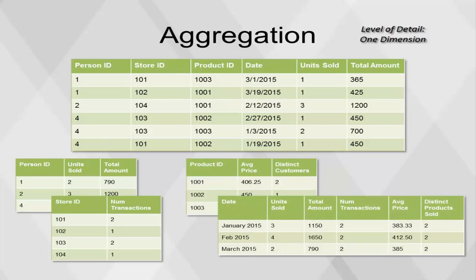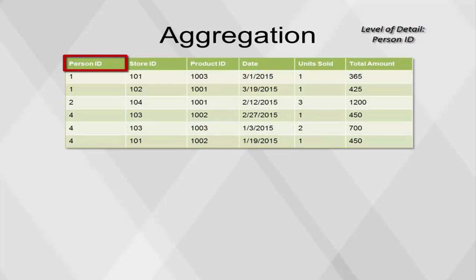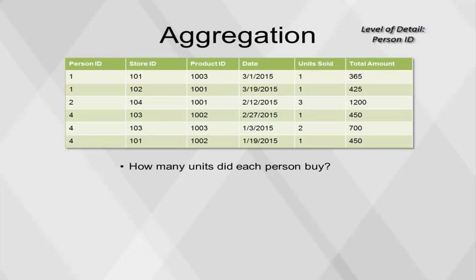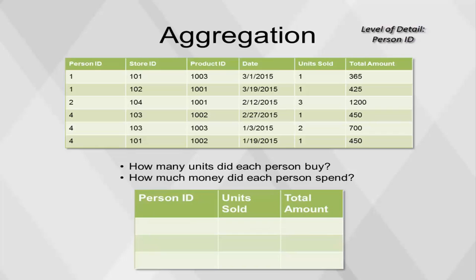Notice that when grouping by a dimension, the dimension is sorted in the output. For this example, we'll aggregate at the person level of detail to answer the following questions: How many units did each person buy? How much money did each person spend? For each person ID, we need to calculate the sum of units sold and the sum of the total amount.